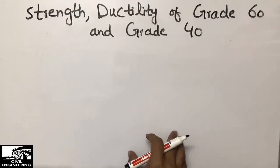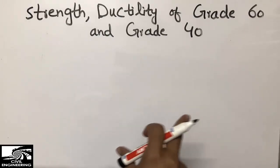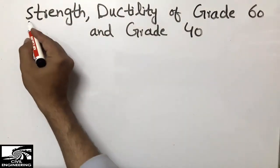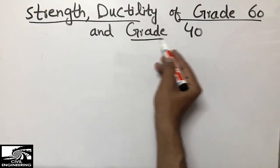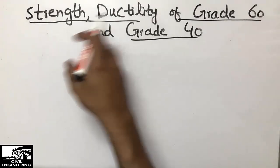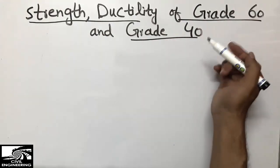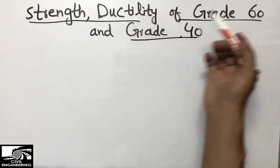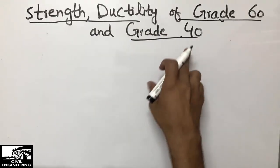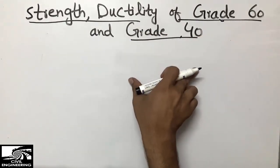Hello guys, welcome to the C1 Engineering YouTube channel. Please subscribe to our channel for more C1 Engineering updates. Today our topic is the strength and ductility of Grade 60 as well as Grade 40 — specifically, which one is more ductile, which one has more strength, and why.